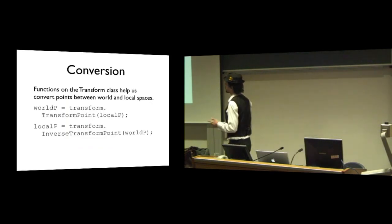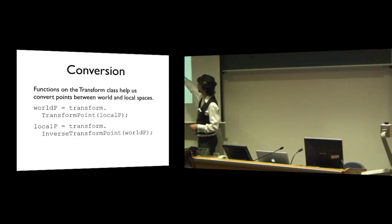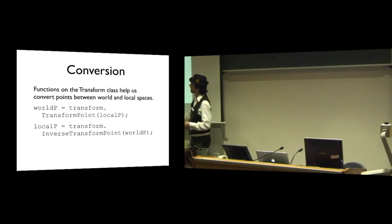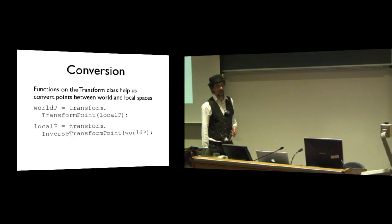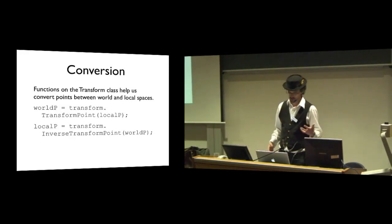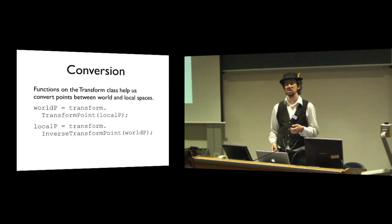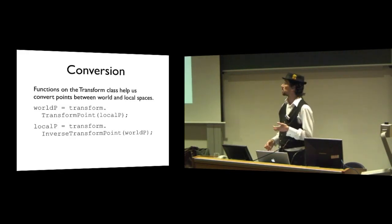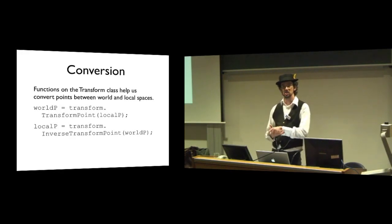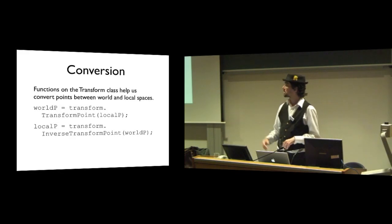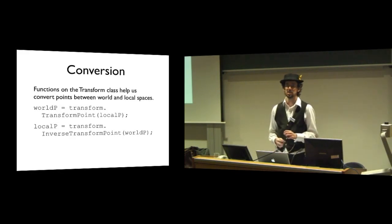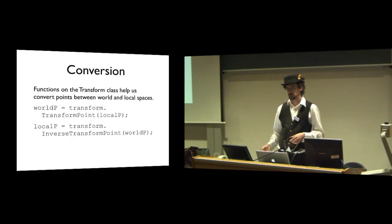The transform class provides a bunch of methods for transforming between world and local spaces. I can take any local point within the local space of a transform and convert it into a world point using the transform point function, and do the opposite using the inverse transform point function. I find it difficult to remember which one's forwards and which one's inverse — I wish they'd named it something more sensible like world-to-local and local-to-world. In the exam you'll be given a booklet of the APIs of all the classes you'll be using, including this one.